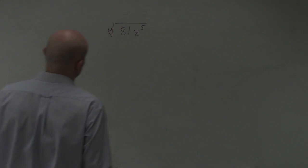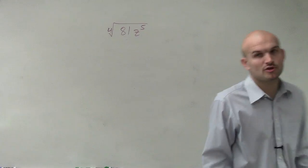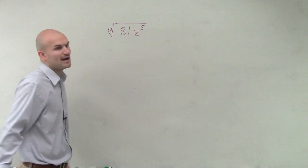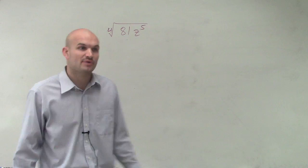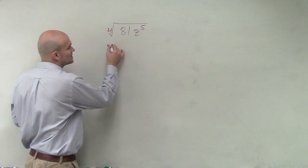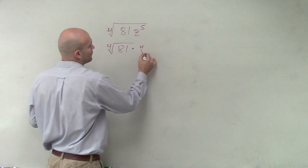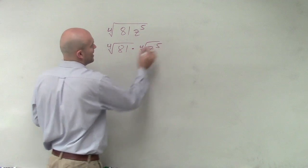First of all, ladies and gentlemen, we want to make sure we know the product rule of radicals. The product rule of radicals states if I have a product of radicands, I can break that up with my radicals. So I can break this up into fourth root of 81 times the fourth root of z to the fifth power.